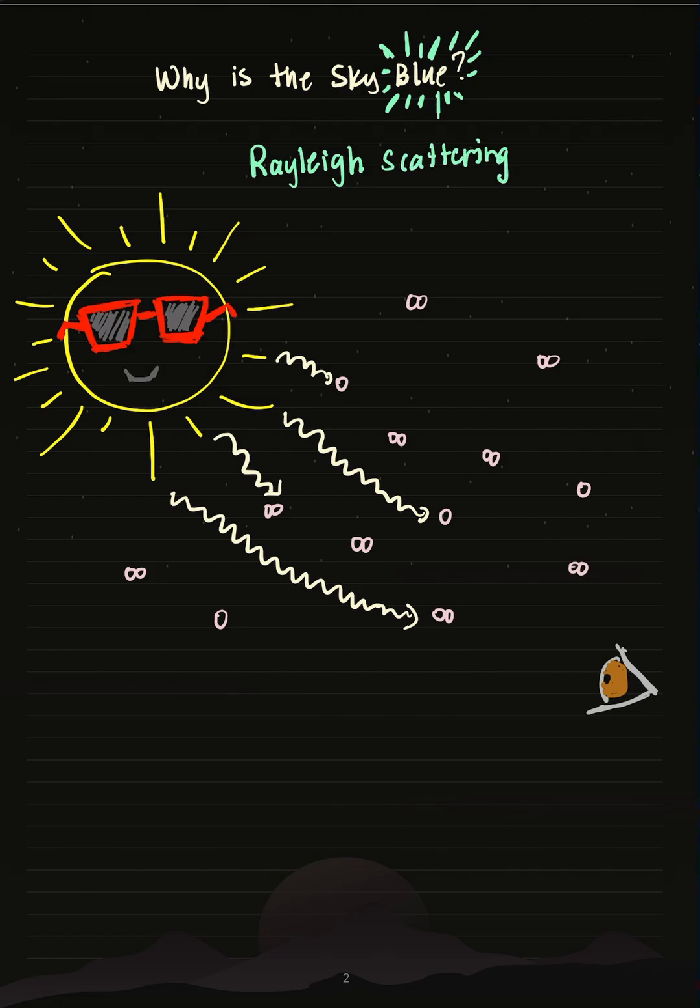So what is Rayleigh scattering? If we look at our diagram, we can see that the light coming from the sun is actually known as white light.